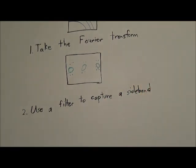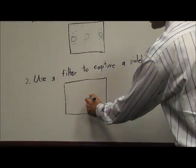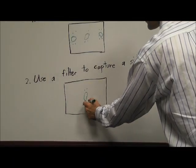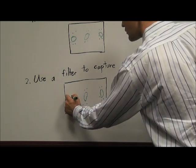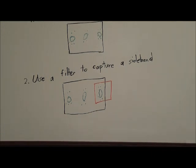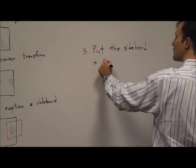Step 2. A filter selects just one of the sidebands. Step 3. The sideband is put in the center of a new image.